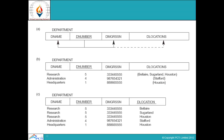However, a new problem arises: data duplication starts here. Redundancy starts here. You can see that D name, D number, and DMR SSN now contain the same data three times. So redundancies arise, and this creates another problem that must be removed in another level — another normal form.